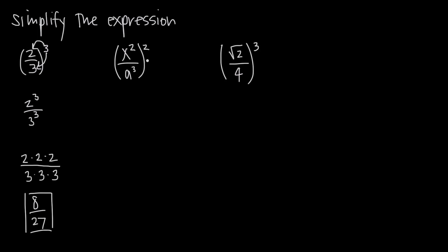We can do this with variables also. So if we look at this fraction we have x² over a³ and that whole fraction is raised to the power of 2. Well, we can apply this exponent separately to the numerator and denominator. So we can get x² and then squared again, and a³ and then squared again like this.